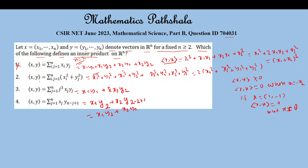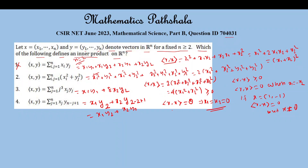For Option 2, the inner product of (x, x) equals 2x1² + x2² + x1² + x2² = 4x1² + x2², wait — it is 2(x1² + x2²) + ... which is always greater than or equal to 0. If the inner product of (x, x) = 0, then x1 = x2 = 0, meaning x is the null vector. So positivity and definiteness are both satisfied for Option 2.